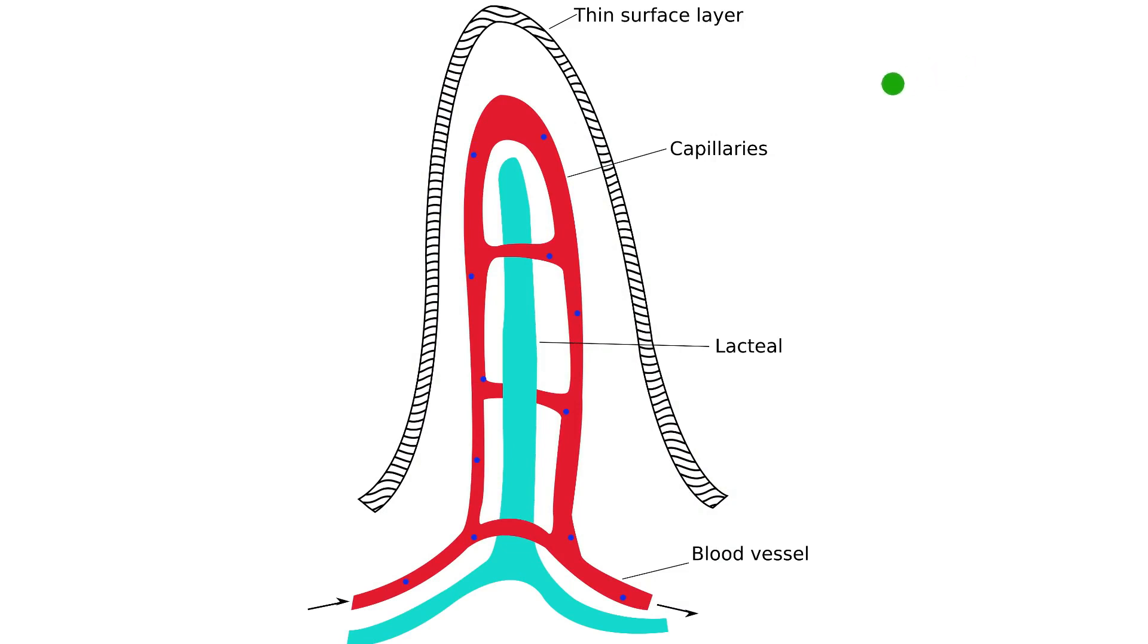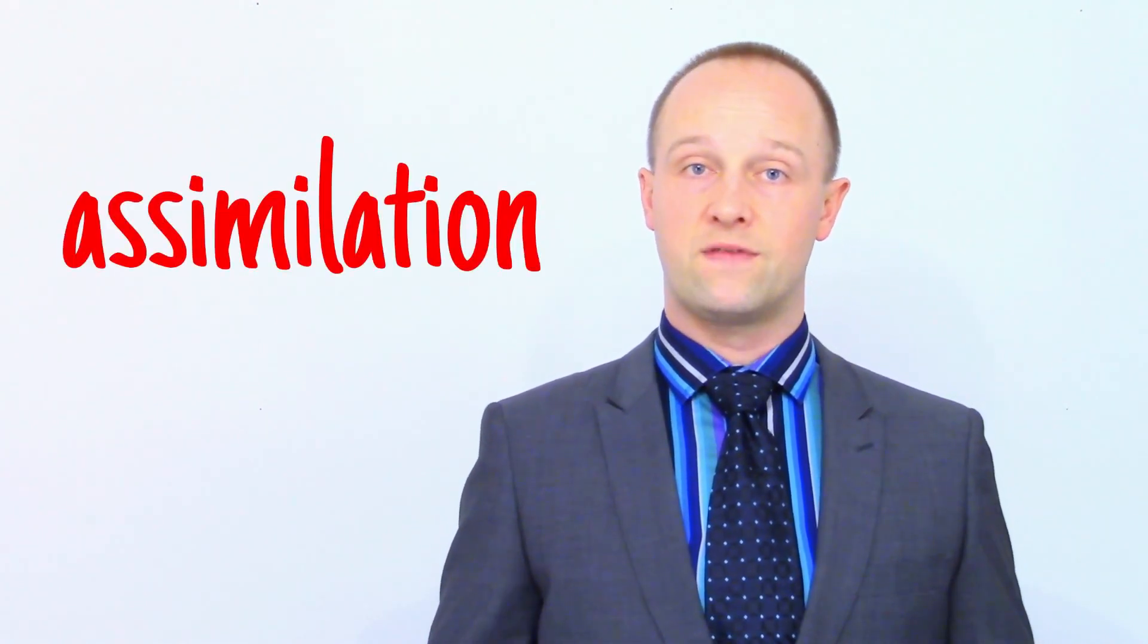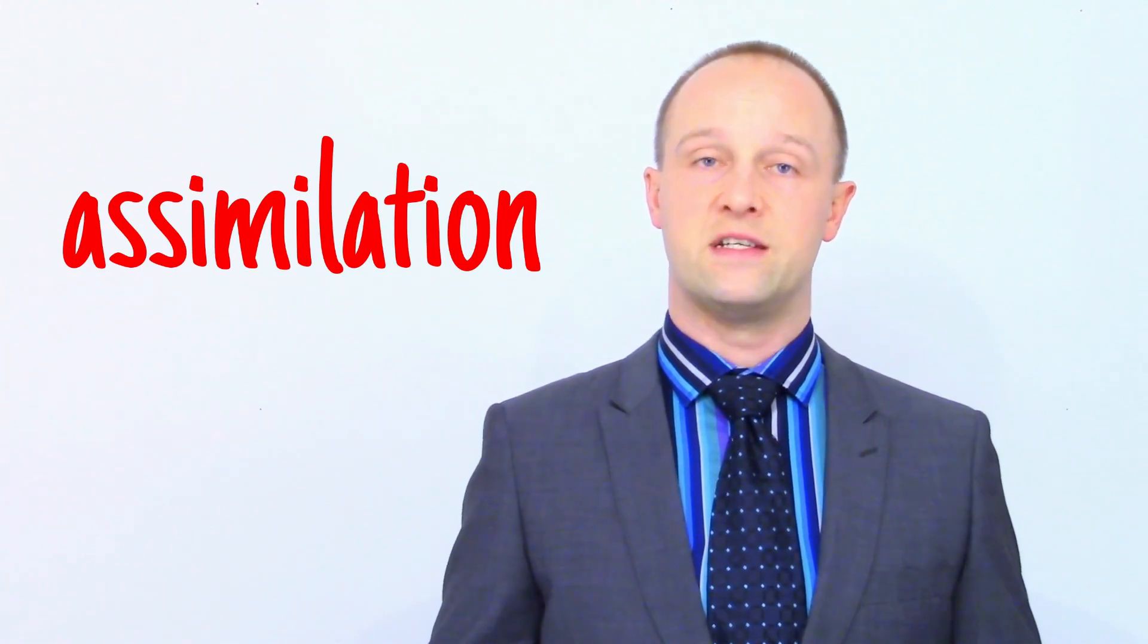Absorption, remember, is where small molecules which are dissolved in water are able to pass from the intestine into the bloodstream, in this case via the villi. Once these nutrient molecules have been absorbed into the blood plasma - and blood plasma is just another water-based liquid the nutrients dissolve in - once they've been dissolved into there, they are transported around the body, and then cells can absorb the nutrients and use them for growth and repair in a process called assimilation. The majority of the water from the mixture is absorbed in the small intestine too.